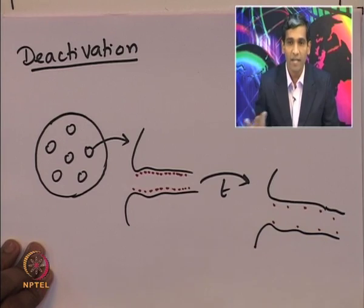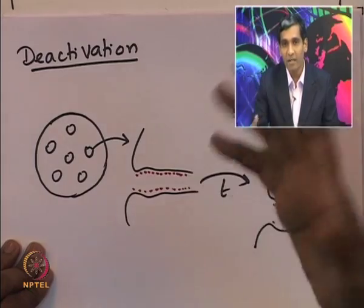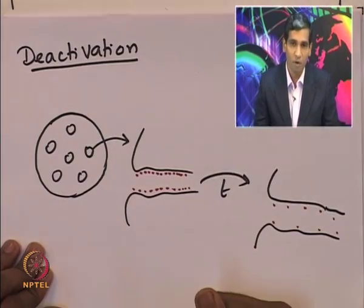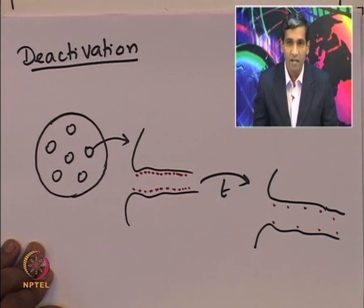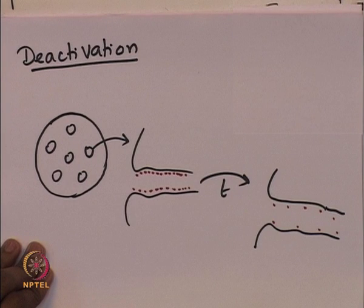In this lecture and the next, we are going to see different types of deactivation, what mechanisms govern the deactivation process, and how to incorporate that into the reactor design. As in the case of any process involved in a catalytic reaction, the first step is to understand how to get the rate law — in this case, how to find the rate law in the presence of catalyst deactivation.